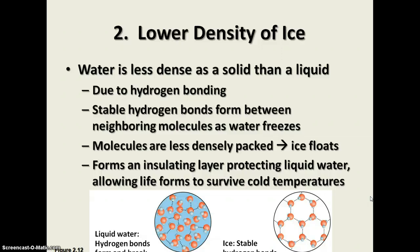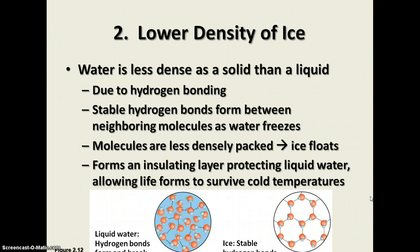Why is that important for living things? If you're a fish living in a pond in a cold climate and the water freezes, notice that it freezes only on top, and liquid water stays underneath. It forms an insulating layer protecting the liquid water, allowing life forms in the water to survive cold temperatures. If ice did not float and sank to the bottom, the whole pond would freeze over and kill most everything in it, because most things can't live frozen.